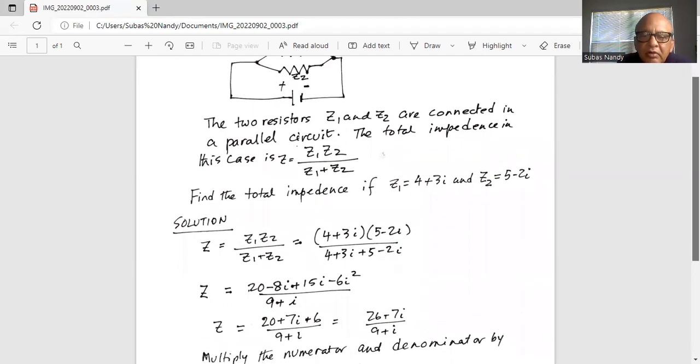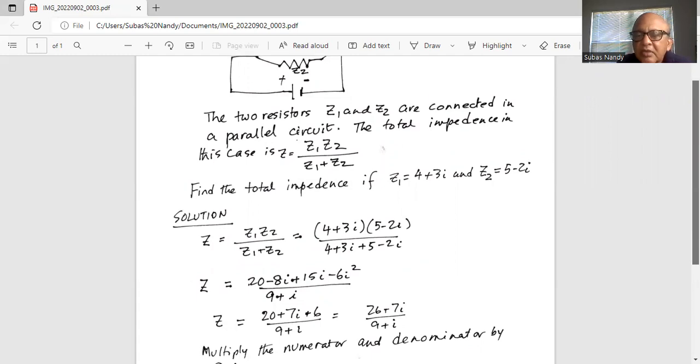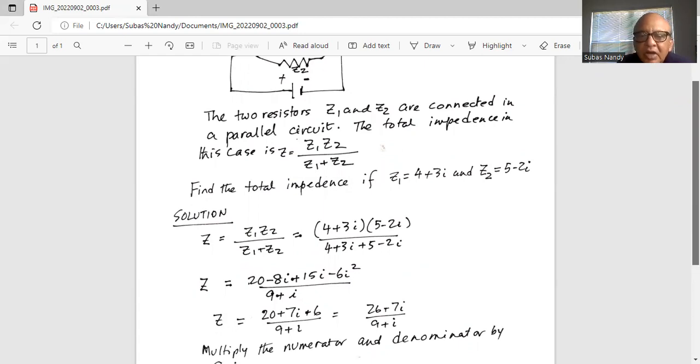So we will first FOIL out the two factors in the numerator. FOIL means first term first. So 4 times 5 is 20. Then outside, which is 4 times minus 2i is minus 8i. Then inside, which is 3i times 5, which is plus 15i. And then the last terms, which is 3i times minus 2i. So it is minus 6i squared...